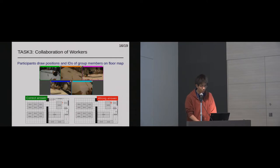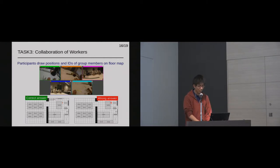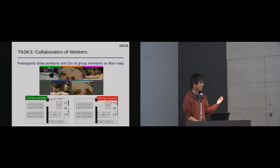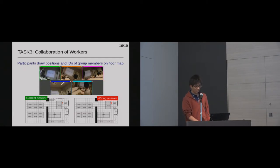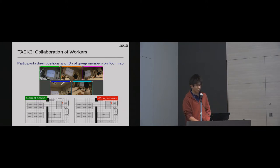In Task 3, we tested whether the proposed view assists understanding of the collaboration of multiple workers. Participants browse five first-person videos and find a worker who is forming a group with a given worker, then draw the position and IDs of the group members on the floor map. The videos last about 30 seconds and the difficulty is that multiple group collaborations occur simultaneously, so participants must precisely identify the target group from several candidates.